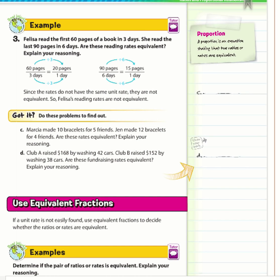Example 3: Felisa read the first 60 pages of a book in 3 days and the last 90 pages in 6 days. Are the reading rates equivalent? After simplifying: 60 over 3 is 20 over 1, and 90 over 6 is 15 over 1. Since they do not have the same unit rates, they are not equivalent.